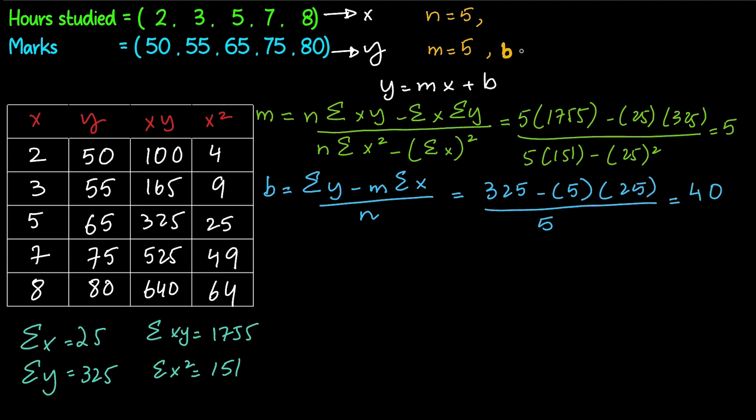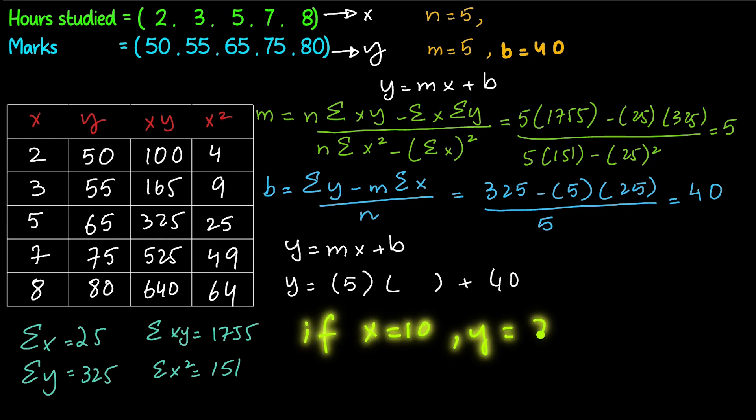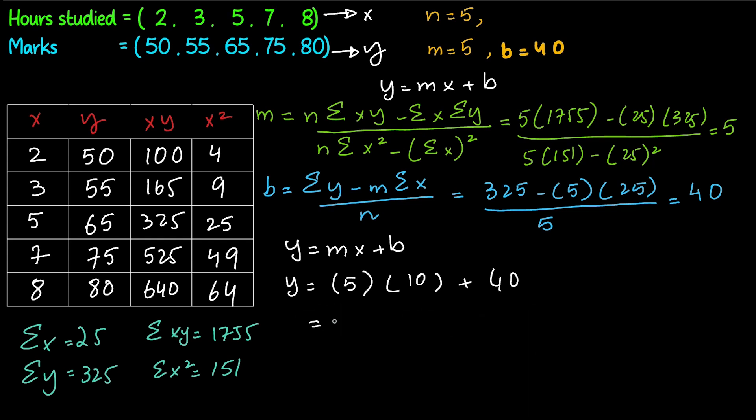So for the formula of linear regression y = mx + b, we now know m and b. Imagine if x is given as 10, what will y be? If the student studies for 10 hours, what will be the marks? We just need to put 10 into the formula in place of x, and we get 90.